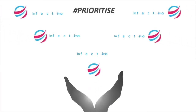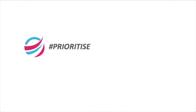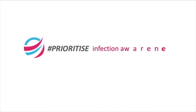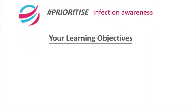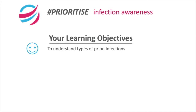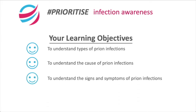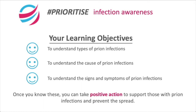Welcome to Transcend Awards. Prioritise infection awareness. Your learning objectives are to understand types of prion infections, to understand the cause of prion infections, and to understand the signs and symptoms of prion infections. Once you know these, you can take positive action to support those with prion infections and prevent the spread.